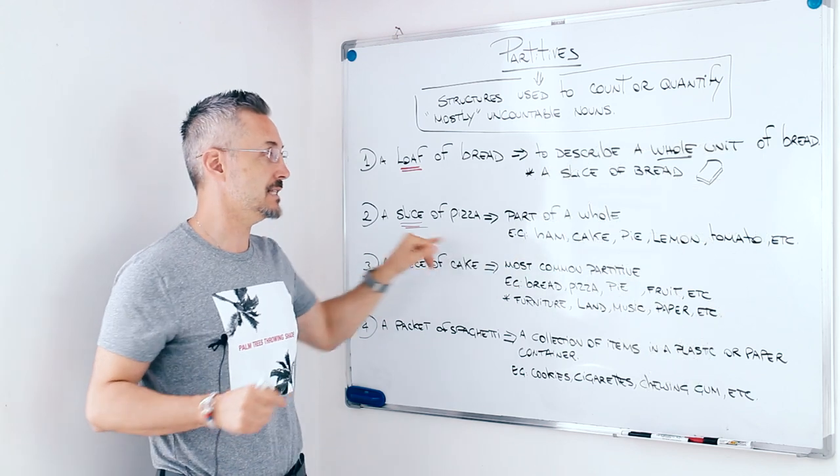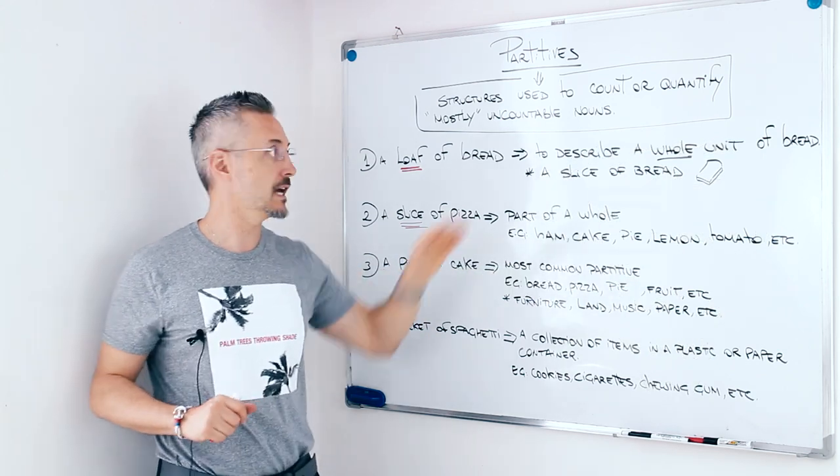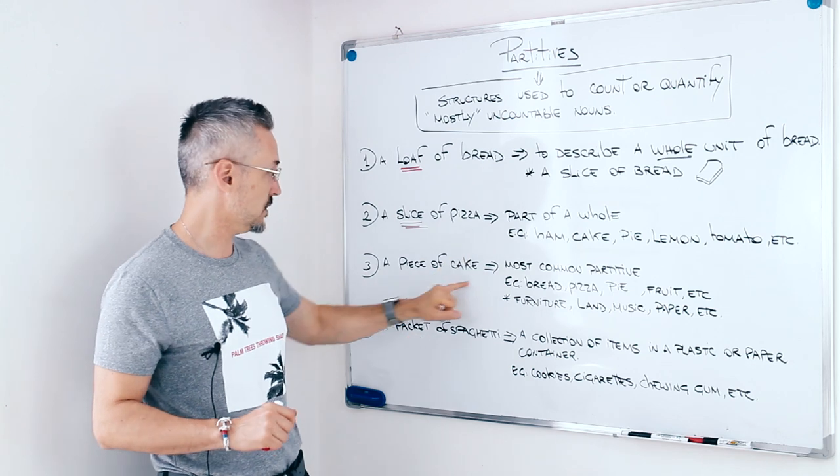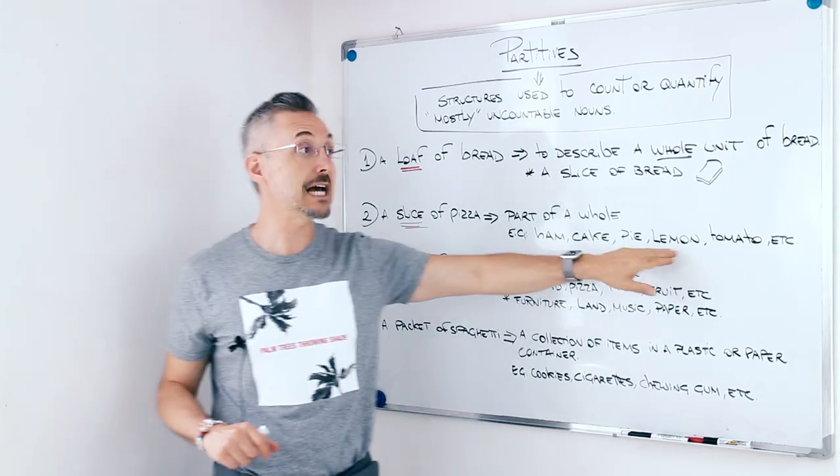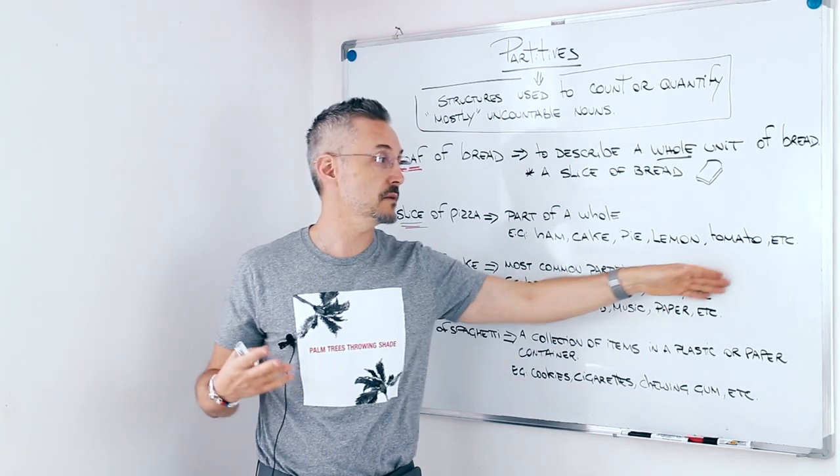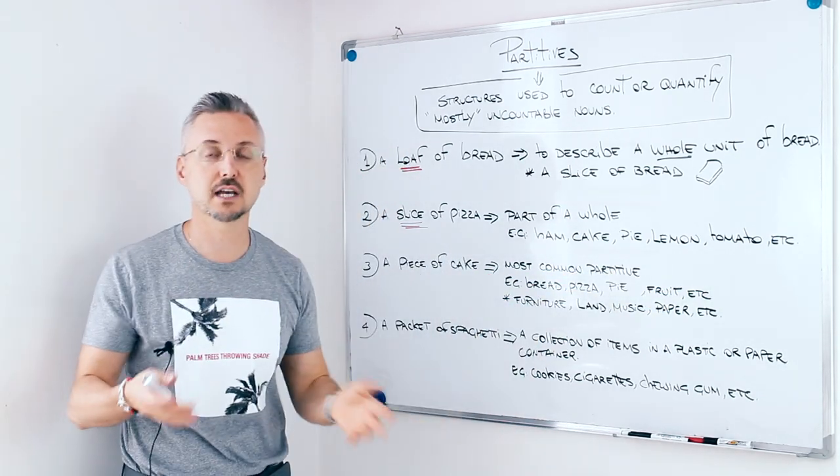We can say a slice of ham, a slice of cake, as we are going to see up here also, a slice of pie, a slice of lemon, a slice of tomato, a slice of orange, etc.